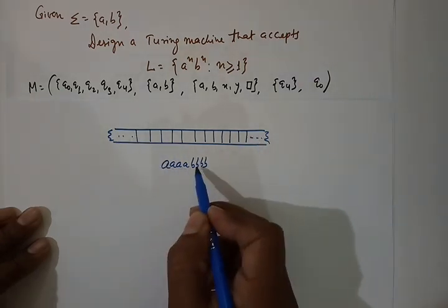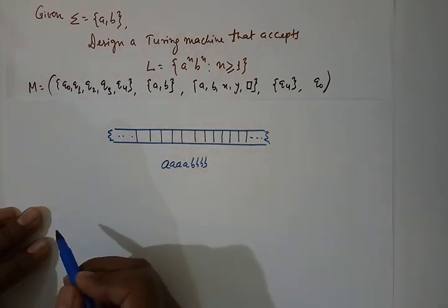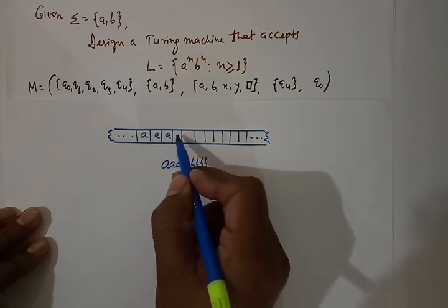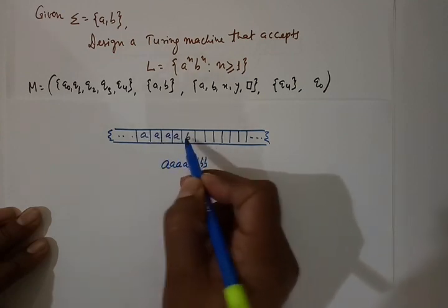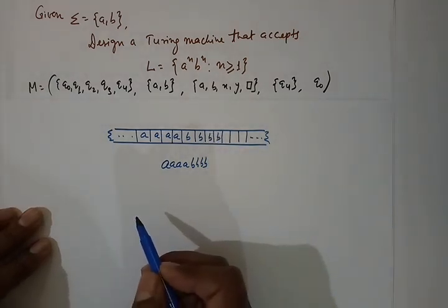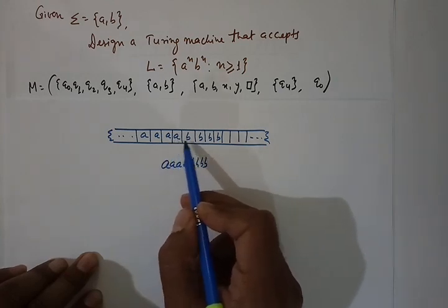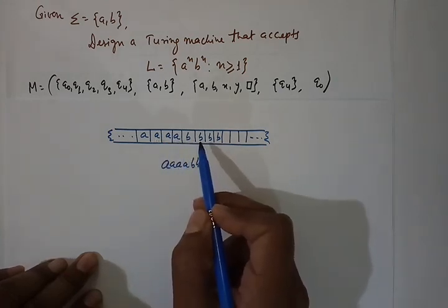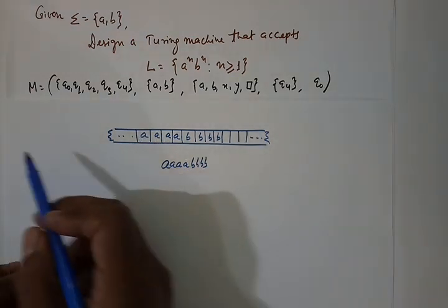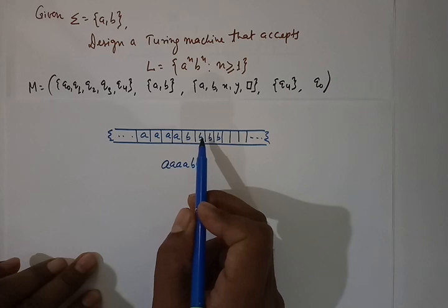We write this string to the tape — one symbol per cell. One important thing: we won't allow any blank symbol in between the inputs. Blank symbols can be on the right-hand side or on the left-hand side, but not between any inputs.